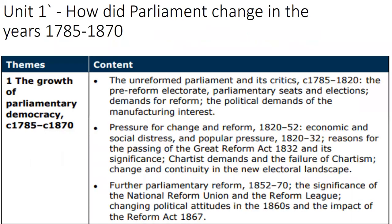Going back to what the exam board want: these bullet points seem very short but we can turn some of them into five, six, or seven lessons. Last lesson you already looked at the unreformed parliament, the critics and the pre-reform electorate, parliamentary seats and elections. Demands for reform will be the focus of this lesson and the next, and we're also going to touch on the political demands of the manufacturing interests. After about three lessons we'll have covered the first bullet point — some of these are a lot more detailed as you go on through the A level.